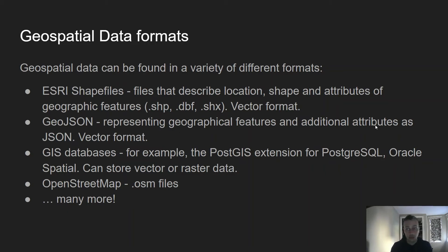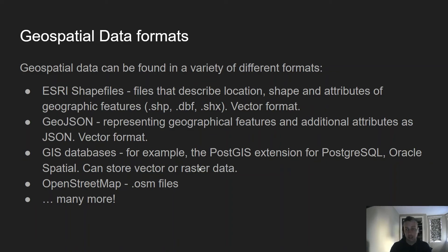GeoJSON is another option. JSON is an extremely common format for APIs and encoding information, and GeoJSON is a geographical extension that adds new types — allowing you to create points, lines, and polygons. It's also a vector format. Another source is GIS databases — GIS stands for Geographical Information System.